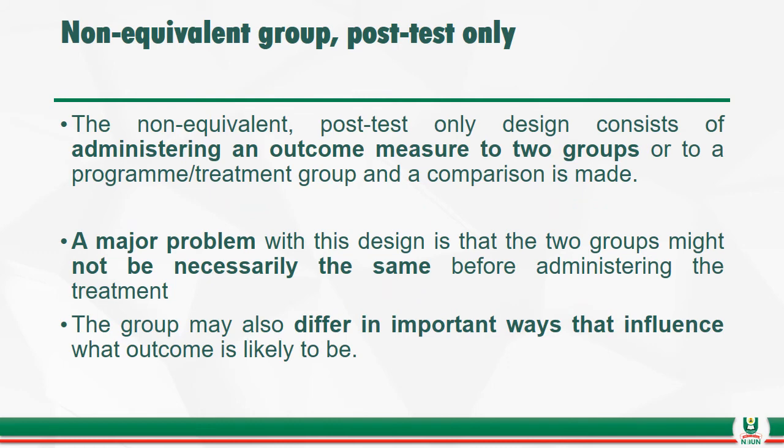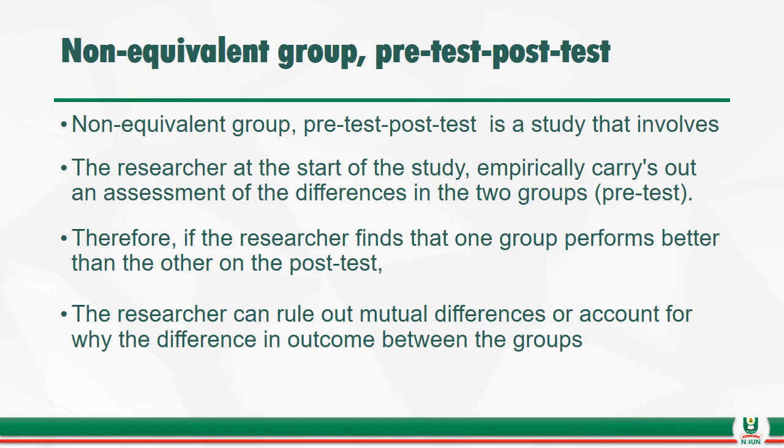The non-equivalent post-test only design consists of administering an outcome measure to two groups — a program treatment group and a comparison group. A major problem with this design is that the two groups might not necessarily be the same before administering the treatment; the groups may differ in important ways that influence the outcome. The non-equivalent group pre-test post-test design involves the researcher carrying out an assessment of the difference between the two groups at the start of the study — that is the pre-test.